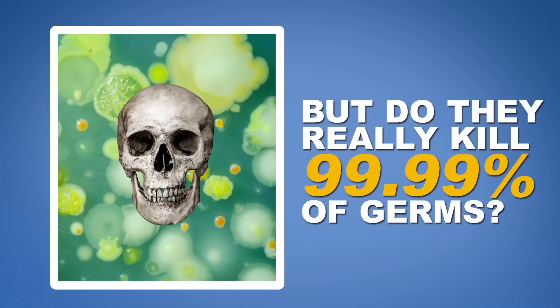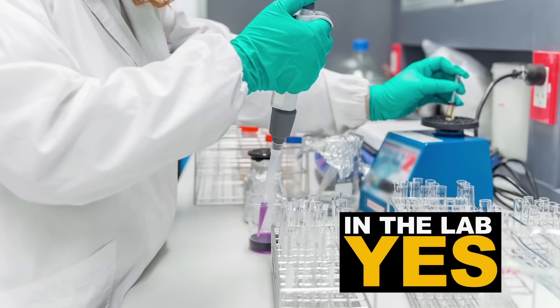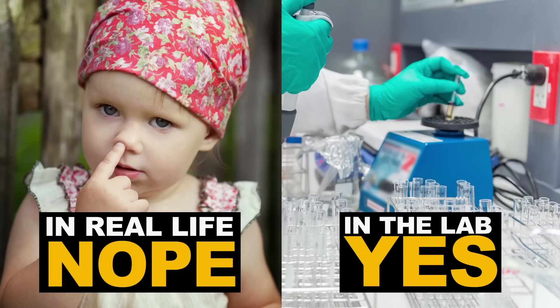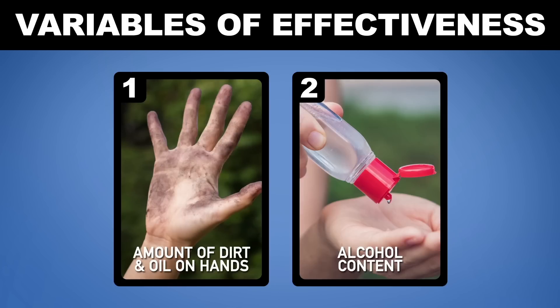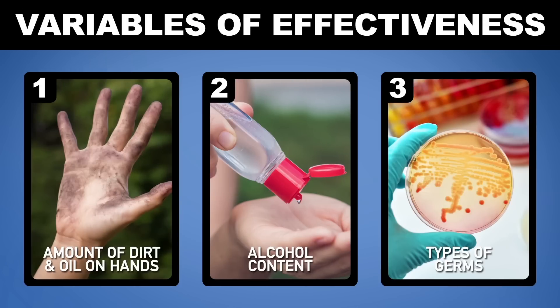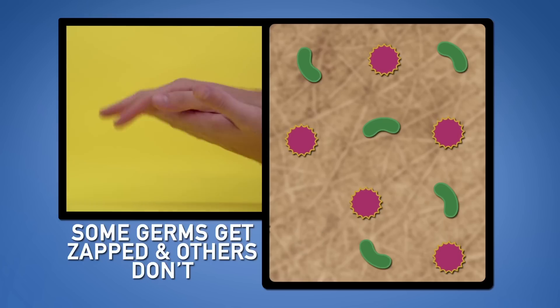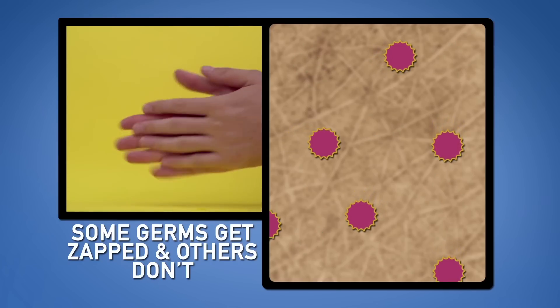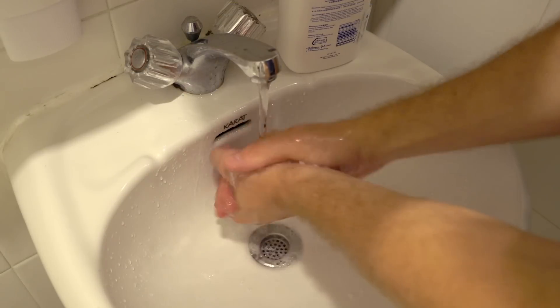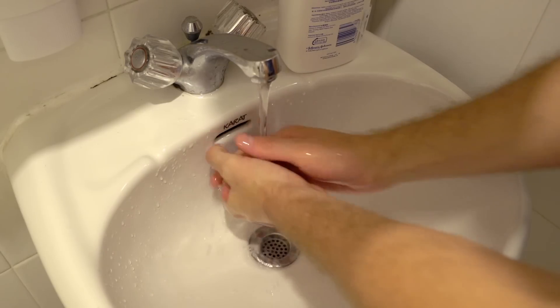So do these chemical goo recipes really kill 99.99% of germs? Well, those numbers are usually results of lab testing, but real life is messier. The effectiveness of hand sanitizer varies on how oily or dirty your hands are, how much alcohol is in there, and which germs you're actually talking about. Under ideal conditions, some disease-causing germs really do get zapped at that rate, but others don't.